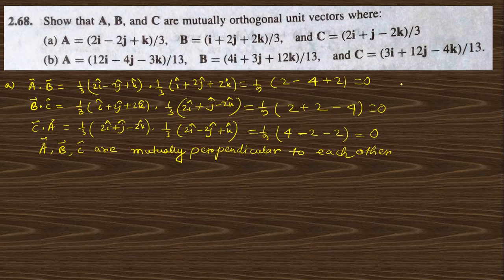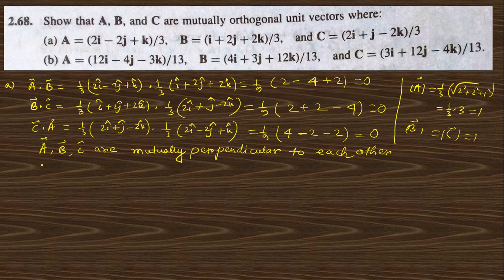To confirm they are unit vectors, the magnitude of A equals (1/3) times the square root of (2 squared plus 2 squared plus 1 squared), which is (1/3) times 3, equals one. Similarly the magnitude of B equals one and magnitude of C equals one.